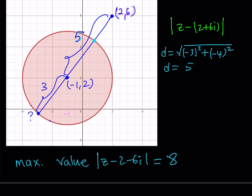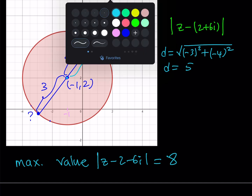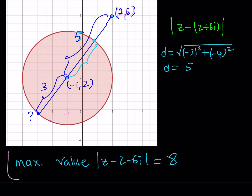What if they asked for the minimum distance? Then you'd subtract the radius 3 from the distance 5, giving 2, which is the minimum value. But we're not looking for that here — the answer to this problem is 8.